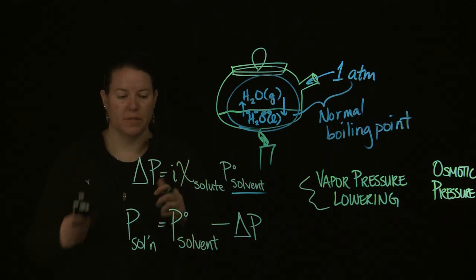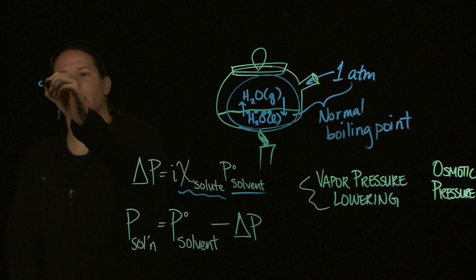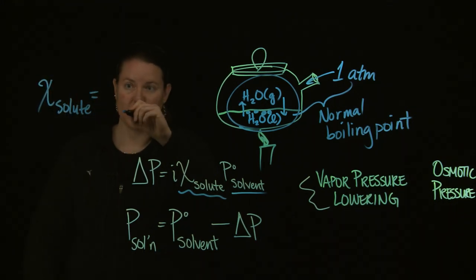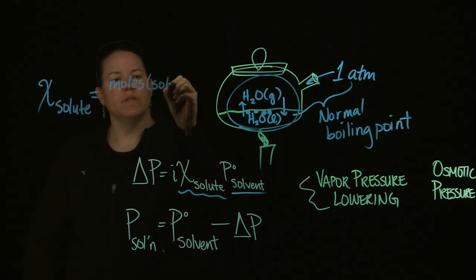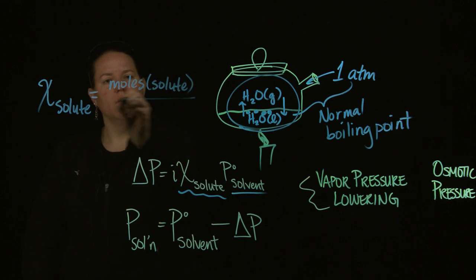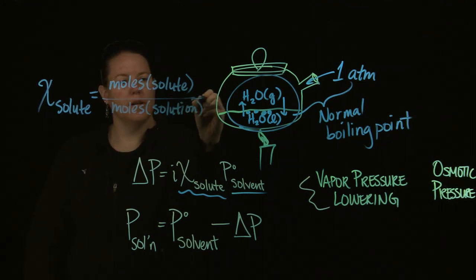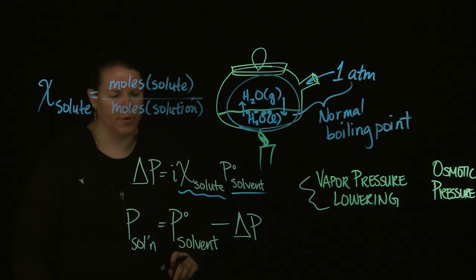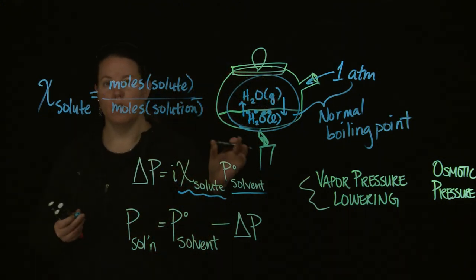In the formula, χ(solute) is the mole fraction of the solute — the moles of solute over the moles of solution. That's a concentration value from the gas chapter. That's one way to talk about vapor pressure lowering, and it incorporates the ability to handle electrolytes.